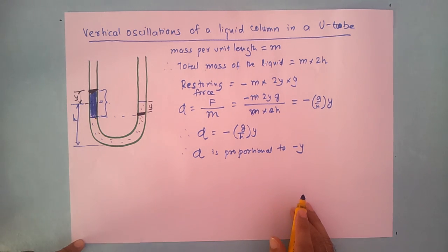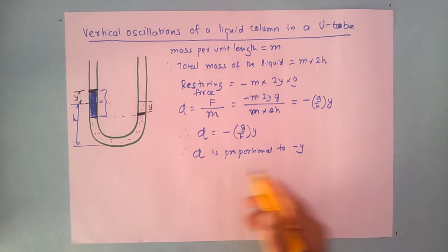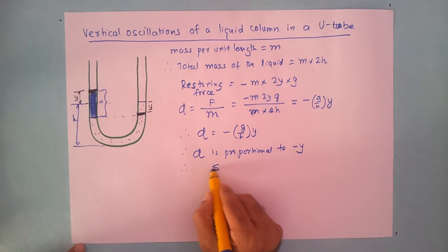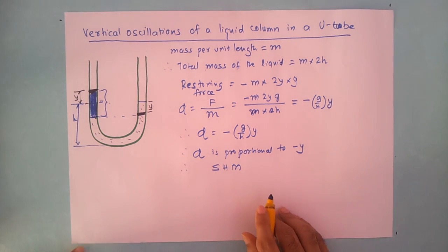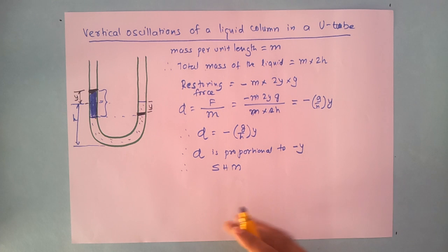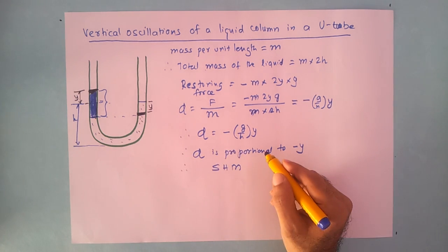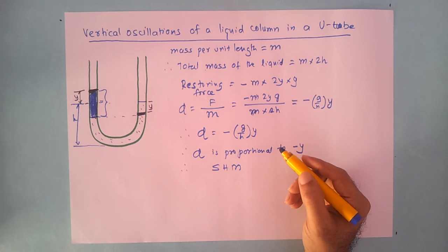We can clearly see that α is proportional to minus y. Acceleration is proportional to displacement and their directions are opposite. Therefore these oscillations are simple harmonic in nature. This is how we prove that vertical oscillations of a liquid column in a U-tube are simple harmonic.